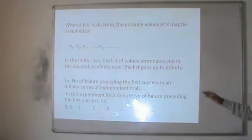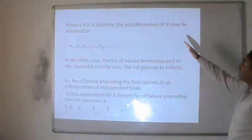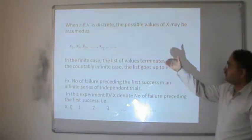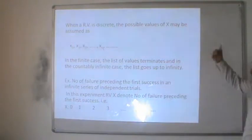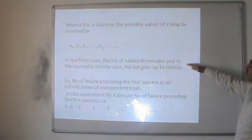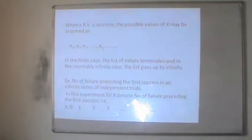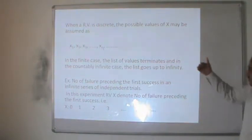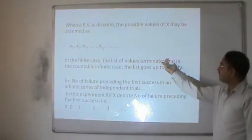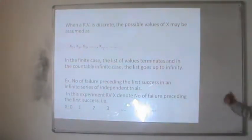When a random variable is discrete, the possible values of x may be assumed as x1, x2, x3, ..., xn tending to infinity. In the finite case, the list of values terminates, and in the countably infinite case, the list goes up to infinity. In the previous case, the values of the random variable are finite — this is the first example where values terminate at 12.